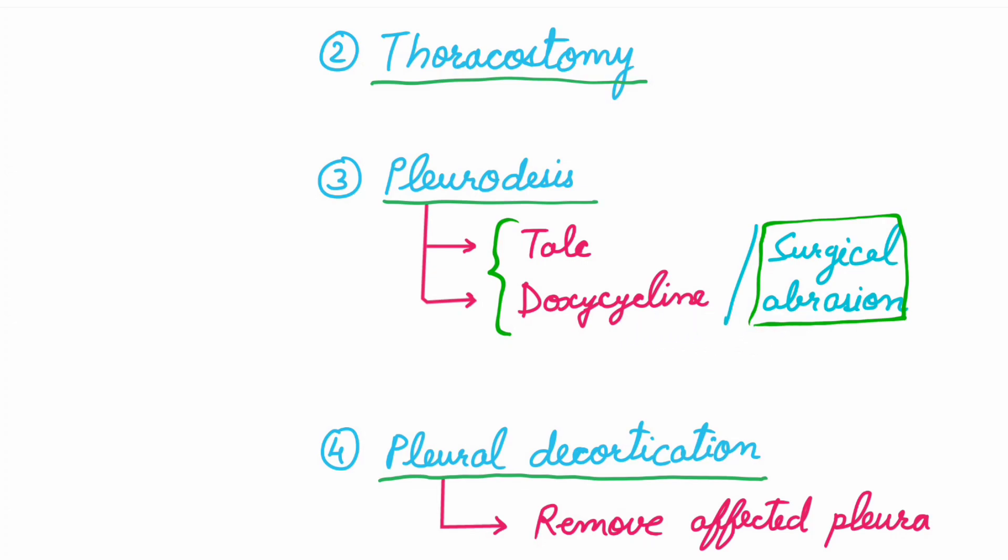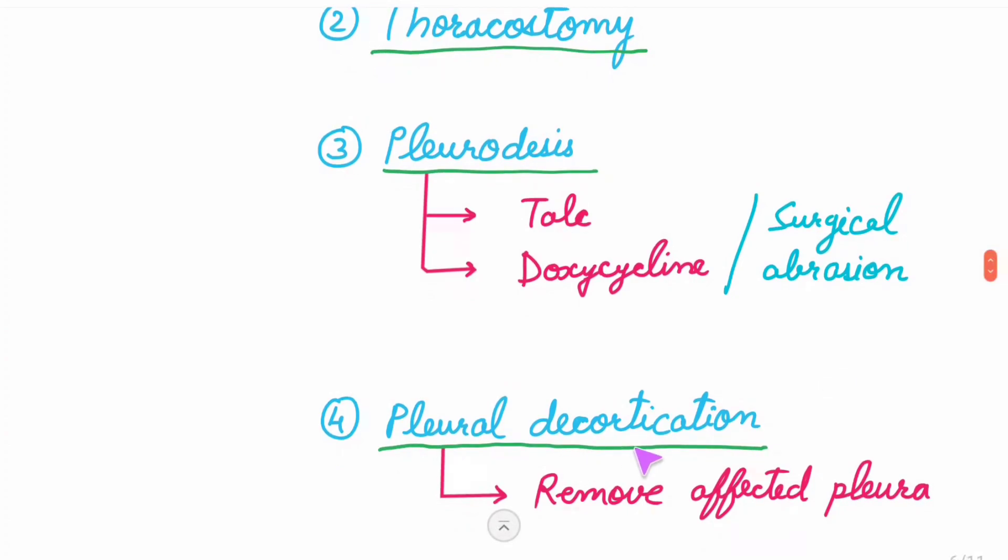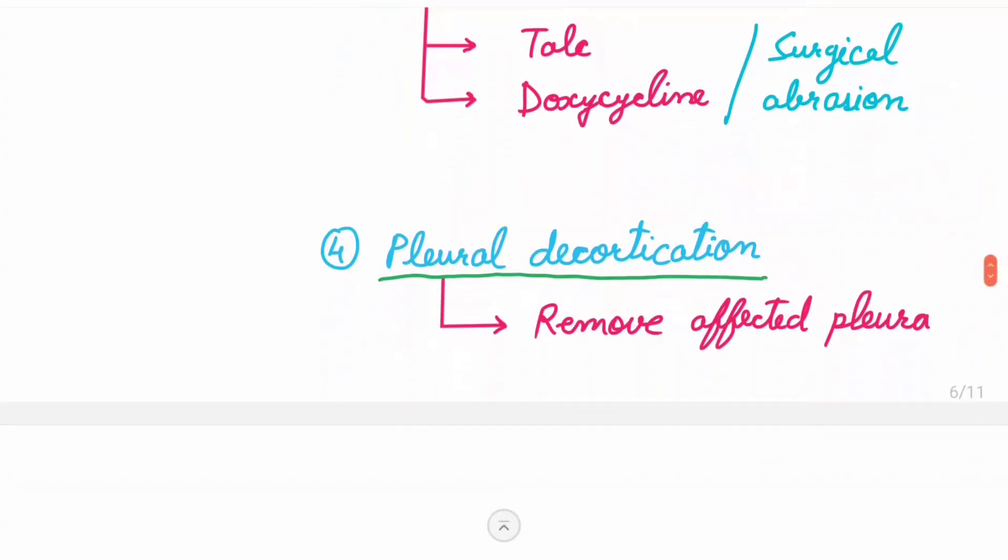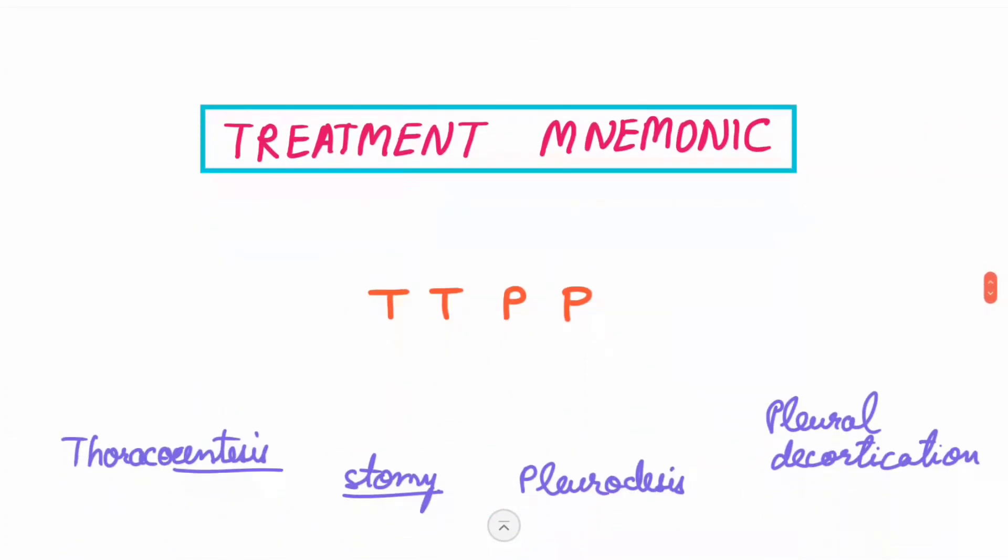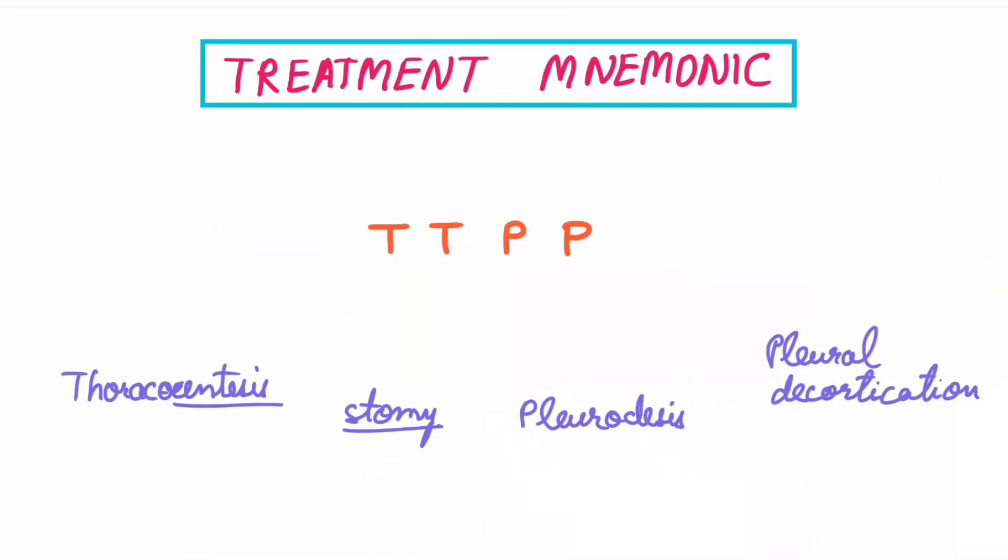Fourth, pleural decortication - that is removal of the affected pleura. Finally, the treatment mnemonic: TTPP. T for thoracentesis, T for thoracostomy, P for pleurodesis, P for pleural decortication.